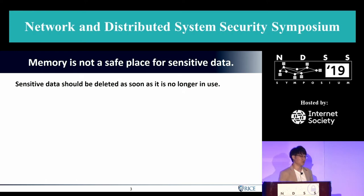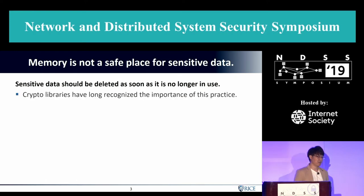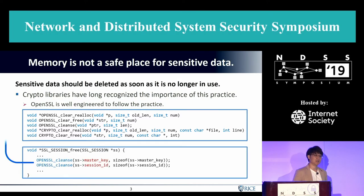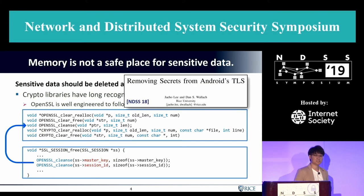Sensitive data should be deleted once it is no longer used. In reality, crypto libraries have long recognized this practice. For example, OpenSSL is well-engineered to follow this practice by providing their own cleanup function, and they call this function whenever critical sensitive data is no longer used. Last year I presented a problem about secret retention here.